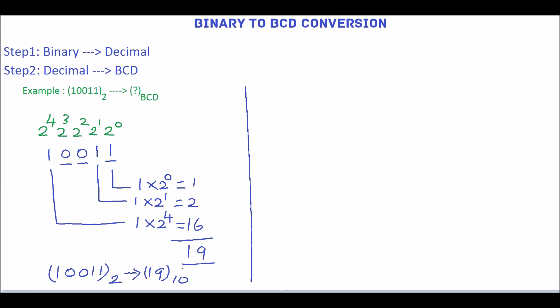In the second step, we will convert the decimal number 19 into BCD. For BCD conversion, represent each decimal digit into 4 bit binary number.